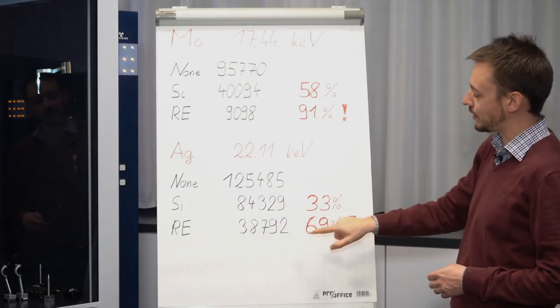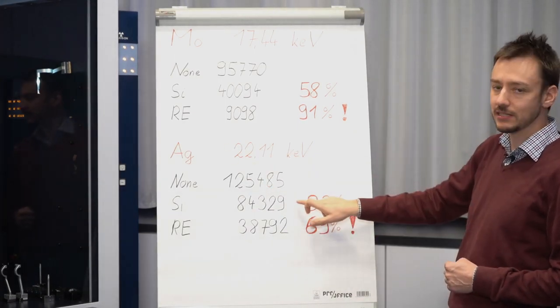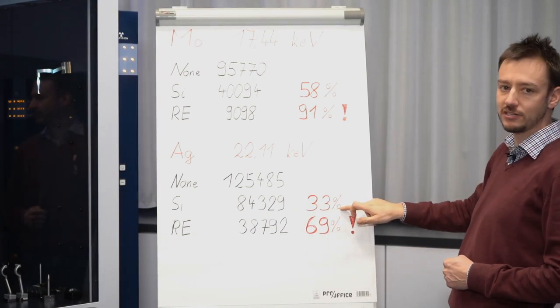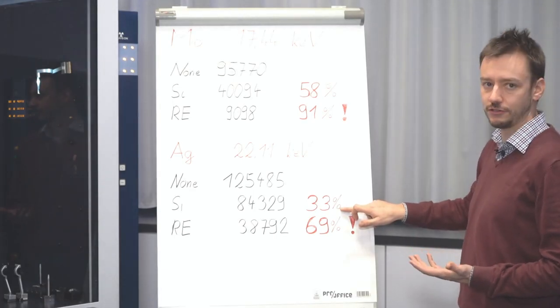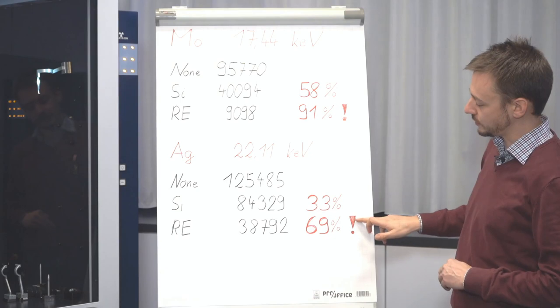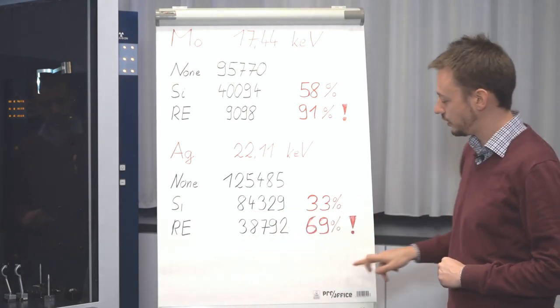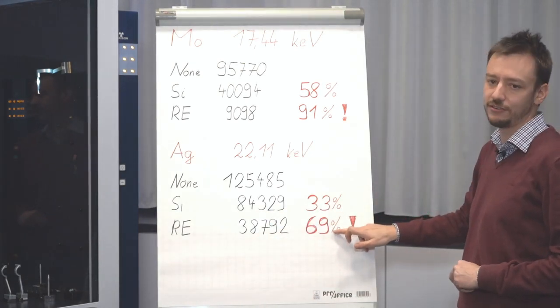Again same setup for the measurement but what you get with silver radiation is only 33 percent on the silicon chip which means two photons out of three are lost. You measure only one third of the photons from your crystal while with the rare earth x-ray converter with 70 percent you are still very very good.